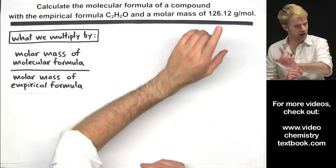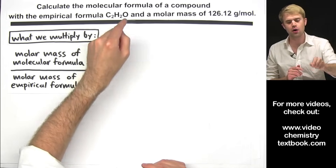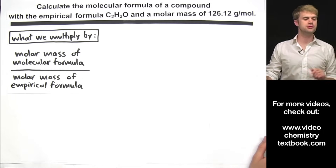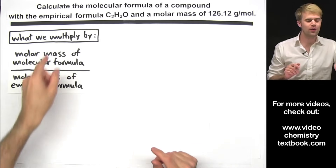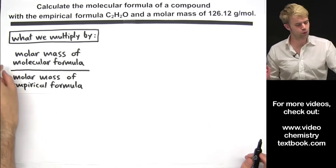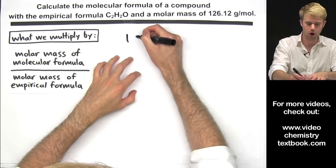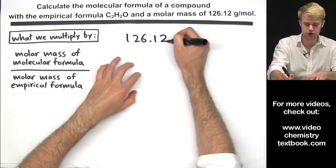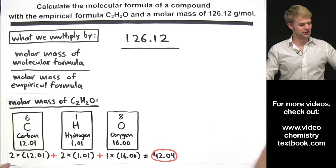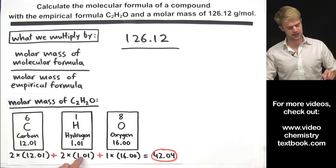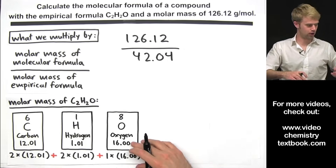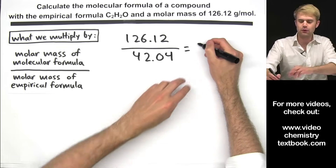Calculate the molecular formula of a compound with the empirical formula C2H2O and a molecular mass of 126.12 grams per mole. We'll use the formula to figure out what we have to multiply the empirical formula by. We start with the molar mass of the molecular formula, 126.12, divided by the molar mass of the empirical formula. We calculate 2 times the molar mass of carbon plus 2 times hydrogen plus 1 times oxygen and get 42.04.